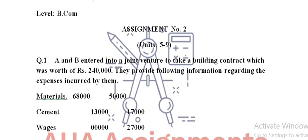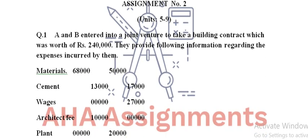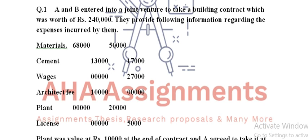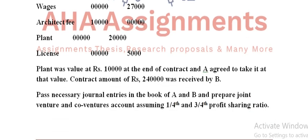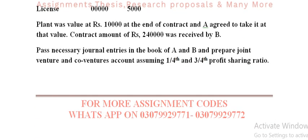A and B entered into a joint venture to take a building contract which was worth rupees 2,40,000. They provide the following information regarding the expenses: materials, cement, wages, architect fee, plant, and all the other things that are given.